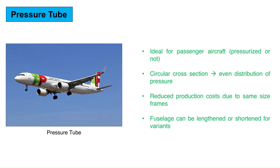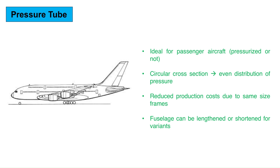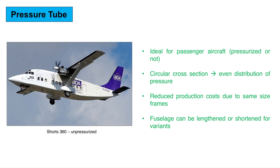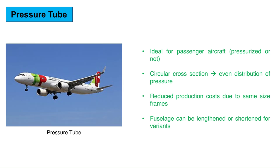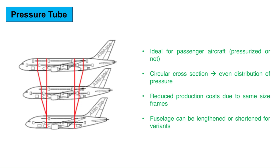Pressure tube fuselage — it has a tubular main section with capped ends. Pressurized or not, this fuselage shape is ideal for passenger aircraft of any size because of its constant cross-section providing space for seating. For an aircraft without a pressure cabin, a rectangular cross-section is cheaper to produce. If the airplane is pressurized, the cross-section is circular, because it allows for even distribution of internal pressure loads, making it structurally efficient and resulting in lower weight for a given strength. This design reduces production costs as the same frames are used, and also makes it possible to construct aircraft variants with a lengthened or shortened fuselage.